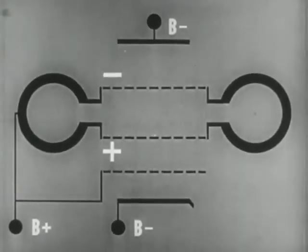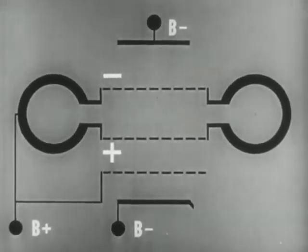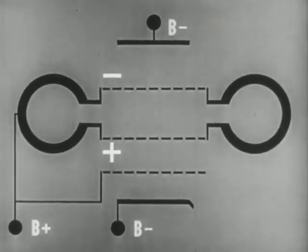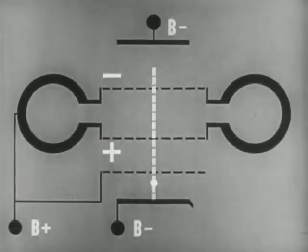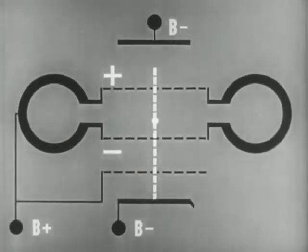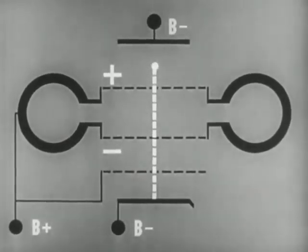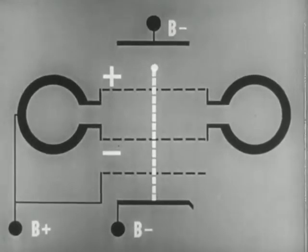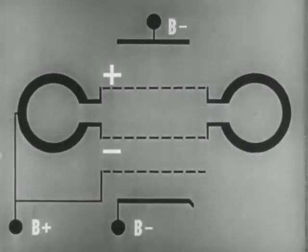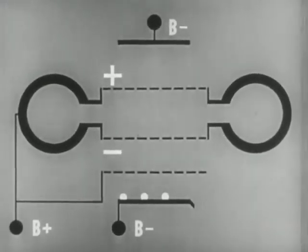Electrons passing upward when the RF field between the grids is in a positive direction will be accelerated, hence they will move almost to the repeller before being turned back. Electrons passing through when the RF field is in a negative direction will be decelerated, so they will go only a short distance toward the repeller. The point at which an electron is turned back depends on its own velocity as it leaves the buncher grids and the voltage on the repeller.